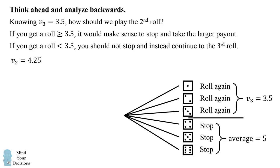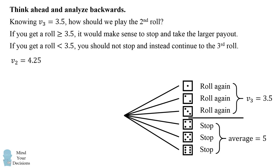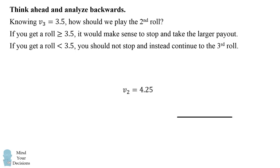So now what can we do? Well, we need to analyze backwards one more time to the first roll. We can do the same sort of calculation. We can replace the entire possibility of the second roll by v2 equals 4.25. Now let's think about the first roll.